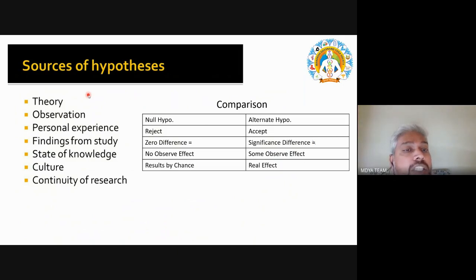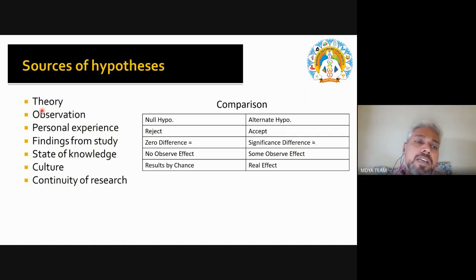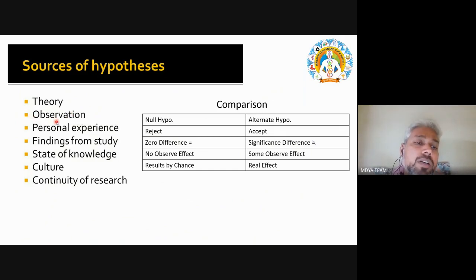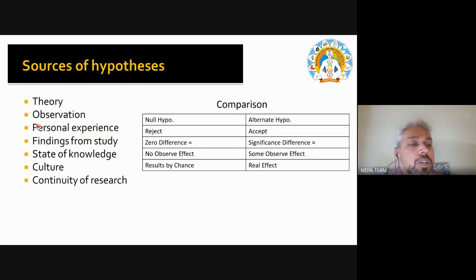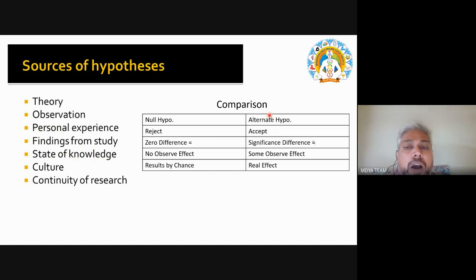The sources of hypothesis — how you create your hypothesis — include: theory (reading previous researchers' theories and finding gaps), observation (observing something in real life), personal experience (experiencing something personally and wanting to research it), findings from studies, state of knowledge, culture, and continuity of research. These are the sources from which a hypothesis is derived.